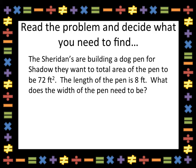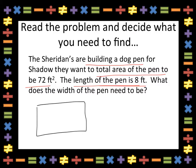For these types of problems, the really important part is reading carefully to decide what you need to find. The Sheridans are building a dog pen for Shadow. They want the total area of the pen to be 72 feet. The length of the pen is 8 feet. What does the width of the pen need to be? Based on this problem, I can picture my rectangle with an area of 72 square feet and a length of 8 feet. What I don't know is the width.